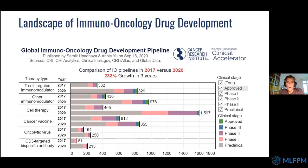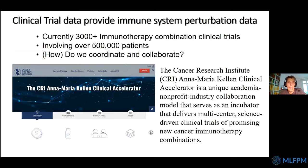From the Cancer Research Institute website, the immune-oncology development space shows thousands of different immunotherapy types in cancer treatment. This has grown enormously, with over 3,000 immunotherapy combination trials ongoing involving more than half a million patients. From a mathematical perspective, every such trial is a perturbation experiment on the immune system — trying to understand how it works and interacts with a tumor.